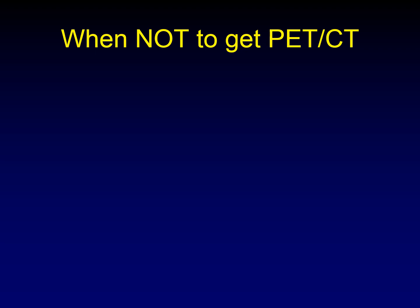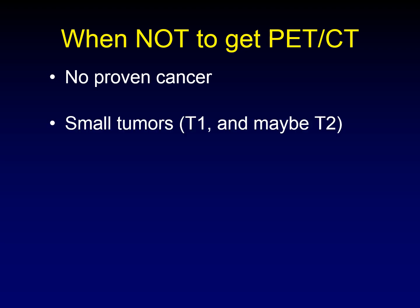When do we not get a PET-CT? If there is no proven cancer, don't get a PET-CT. If you have a neck mass that possibly looks like cancer, wait until you have the FNA and proven cancer before ordering one. PET-CT is an expensive examination and insurers are already reluctant to pay for it. Small tumors — T1 tumors — don't have a strong likelihood of spreading to nodes or distantly, so they probably don't deserve a PET-CT. T2 tumors are more controversial, but T1 tumors really don't warrant it.